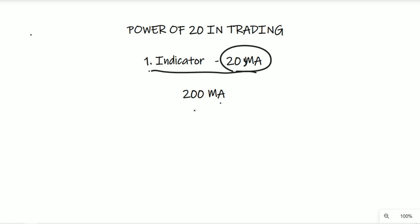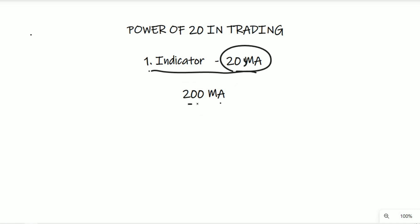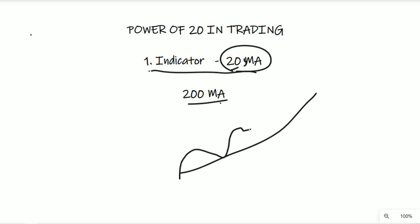The most important indicator is the 200 MA. This is a key indicator in any market.